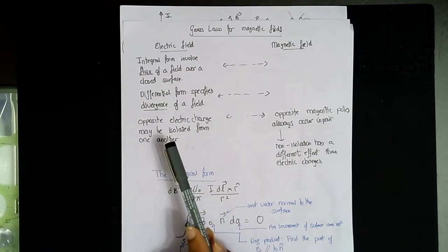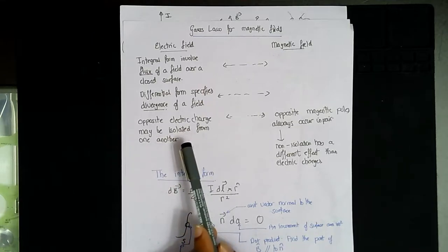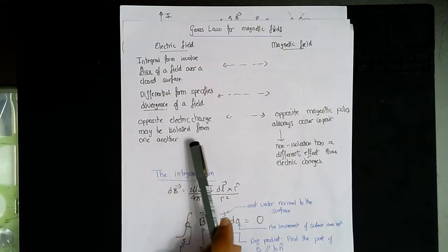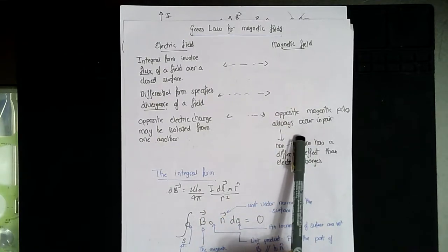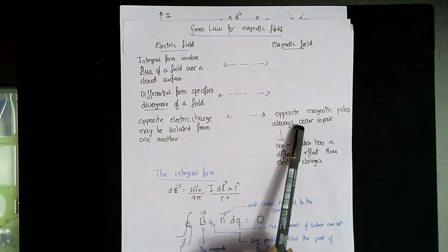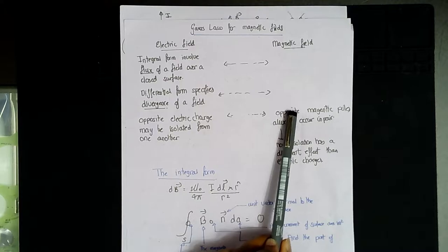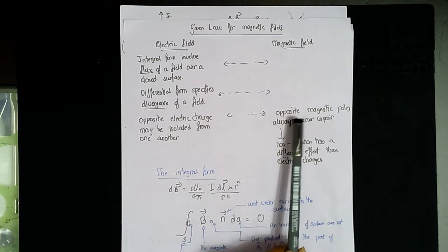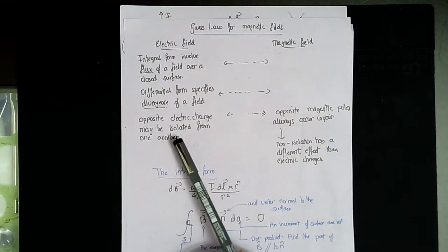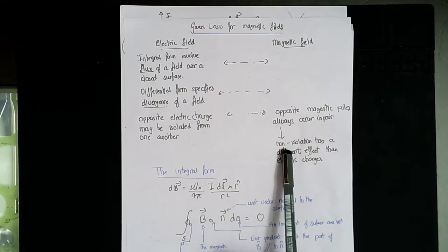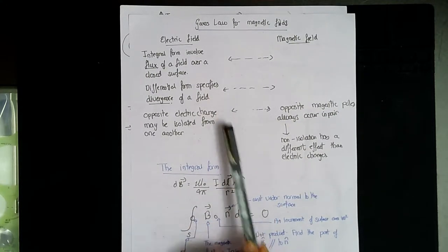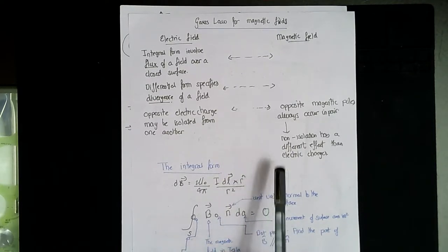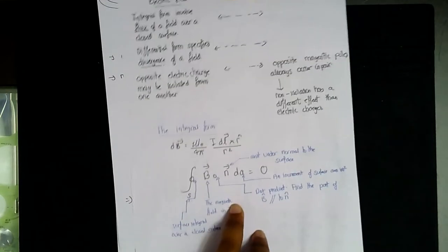In the electric field you can have opposite electric charges that are isolated from one another — a positive electric charge in one location and a negative electric charge in a completely different location. But in the magnetic domain, opposite magnetic poles always occur in pairs. Any magnet will always have a north pole and a south pole. That is a fundamental difference: magnetic poles are always a pole pair, whereas electric charges can be isolated positive or negative.